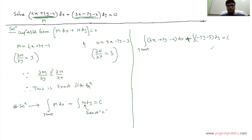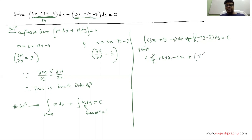This is now a normal integration. For the first integral, with y constant: the integral of 4x is 4·(x²/2) = 2x², then 3y integrates to 3xy, and −4 integrates to −4x. For the second integral with respect to y: −7y integrates to −7y²/2, and −3 integrates to −3y. Setting this equal to C.